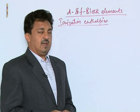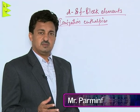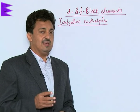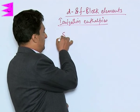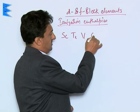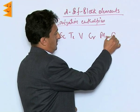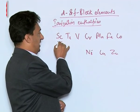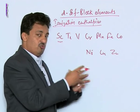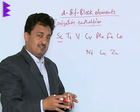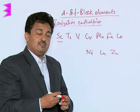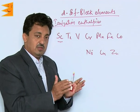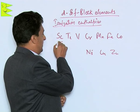The ionization enthalpies of d-block elements, particularly the 3d series, are very high because of the poor screening of the 3d electrons. From scandium, the ionization enthalpies show the usual trend — they increase across the series because the nuclear charge keeps increasing and electrons are added to the same subshell, so the size remains almost the same. From scandium to vanadium, the ionization enthalpy increases.